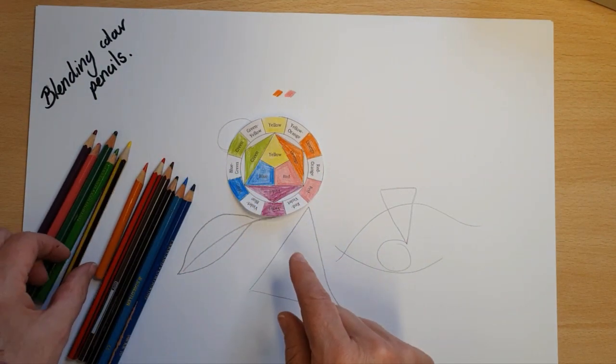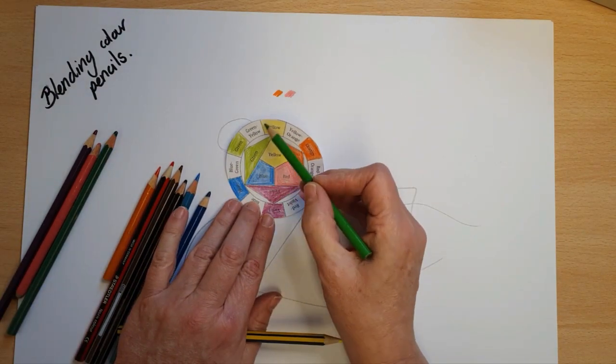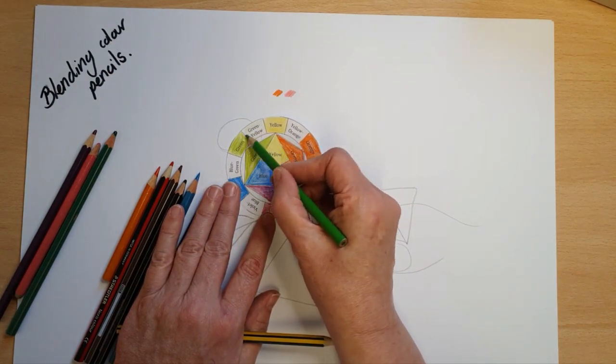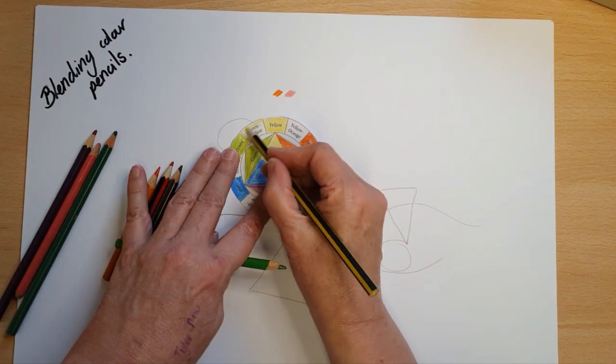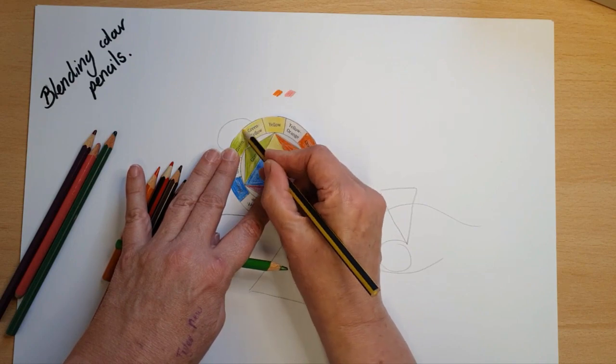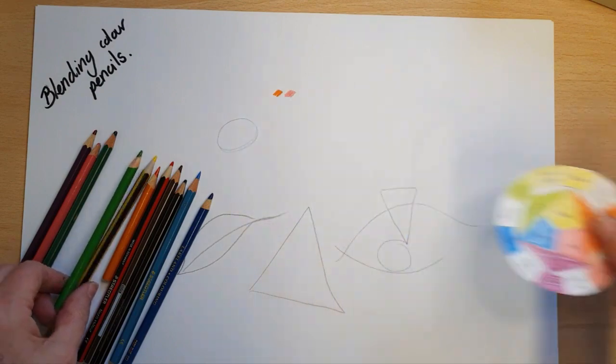And if I wanted to blend them even further, so between green and yellow is a color called green yellow. And if I lightly color a bit of green and lightly color a bit of yellow, you can see I end up with a color somewhere in between, green yellow. Okay, so that's our color theory mixing.